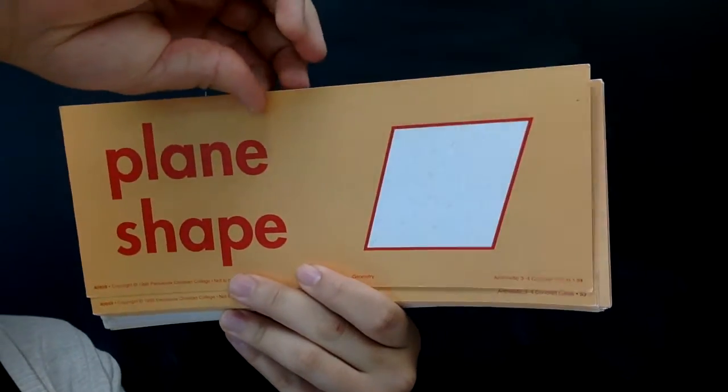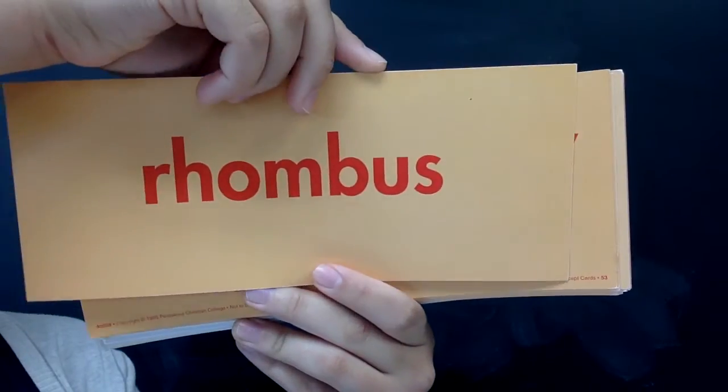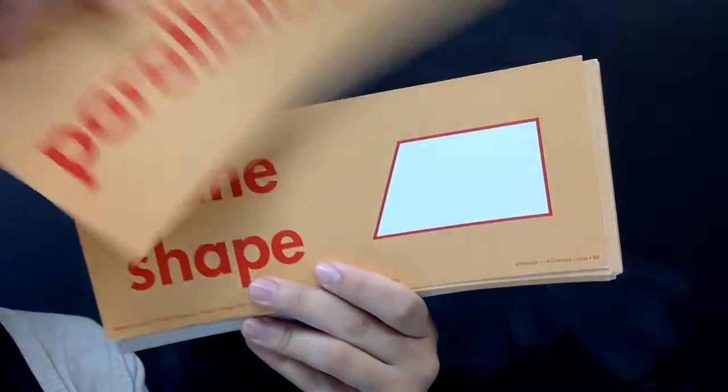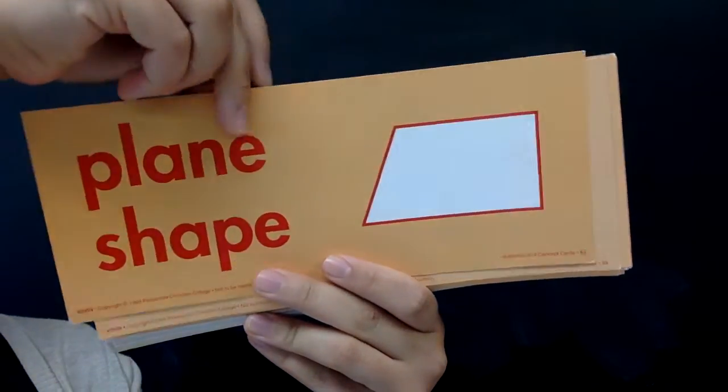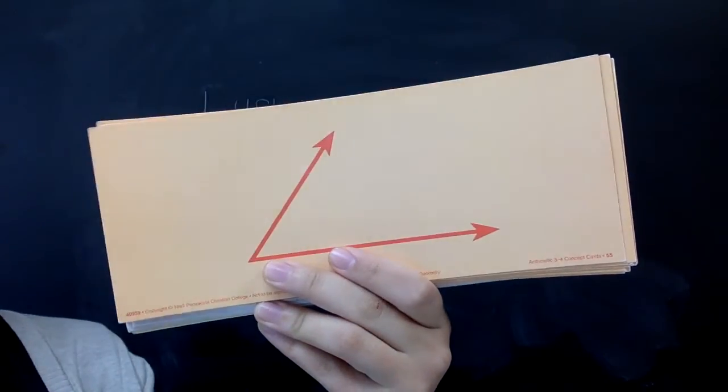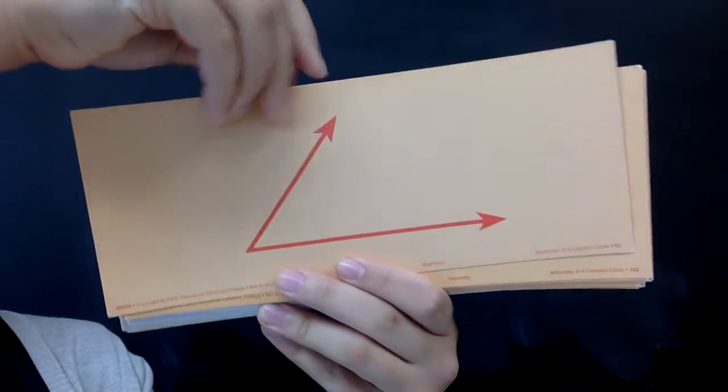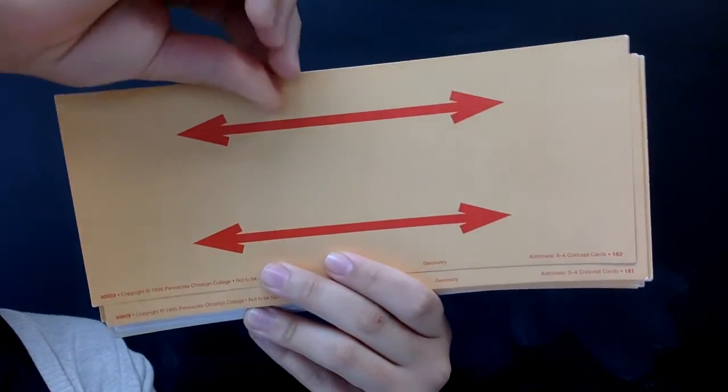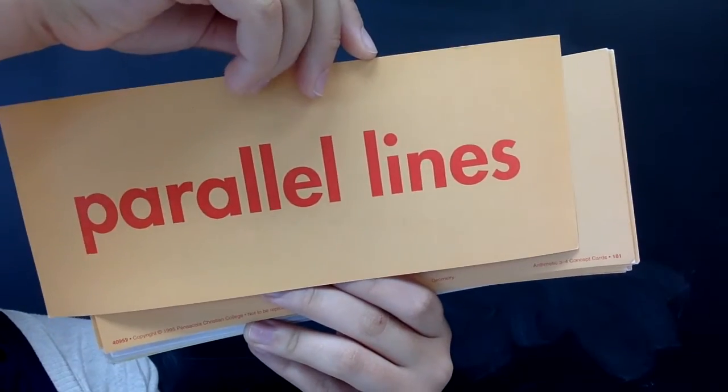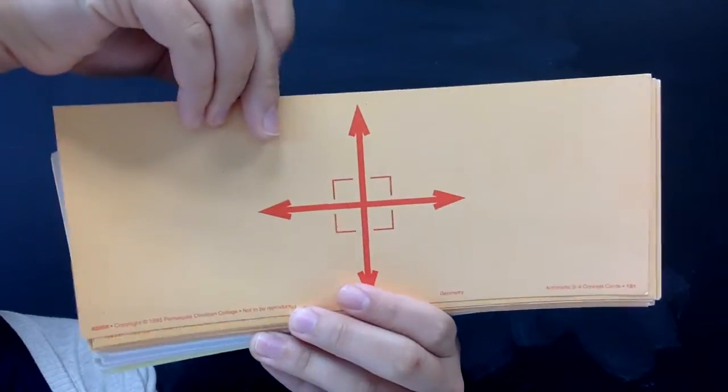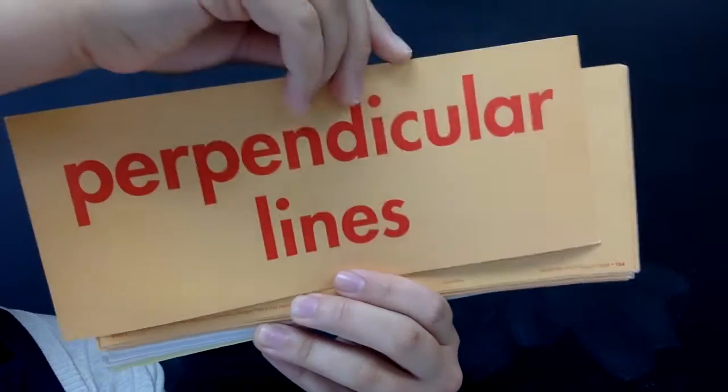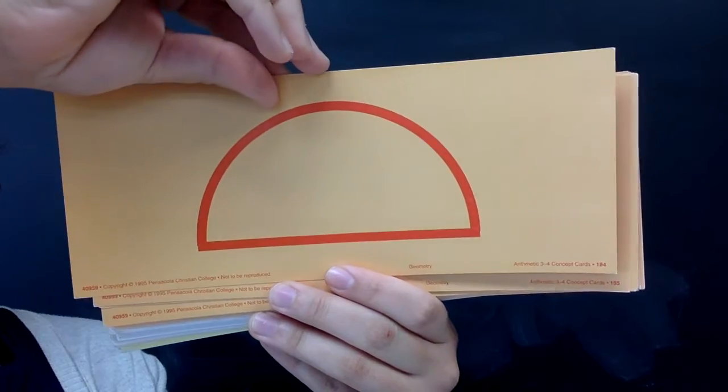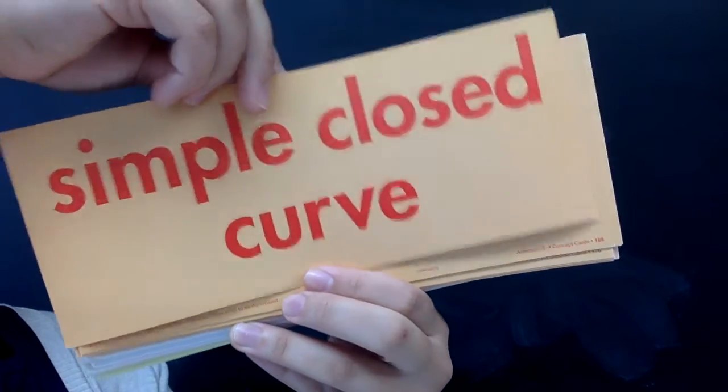What shape is this? Rhombus. Parallelogram. Trapezoid. Angle. Parallel lines. Perpendicular lines. Simple closed curve.